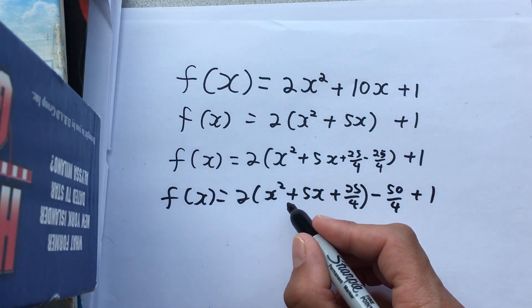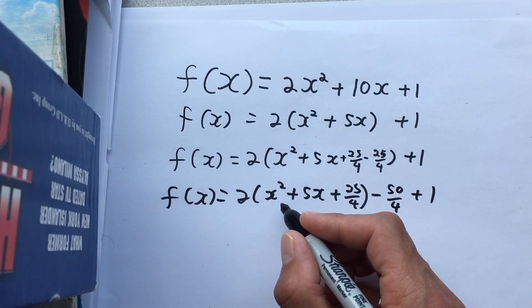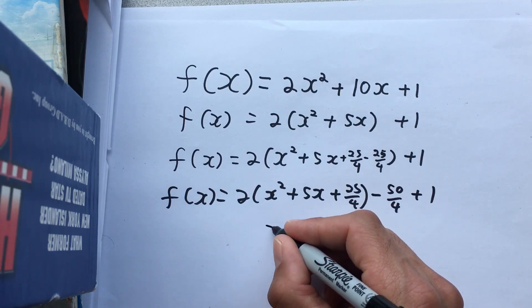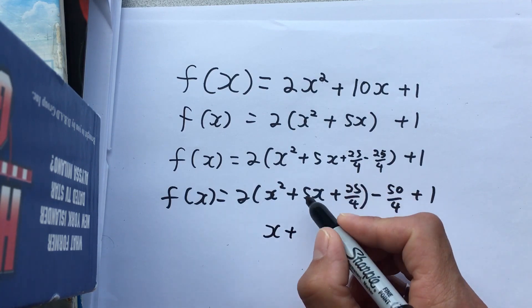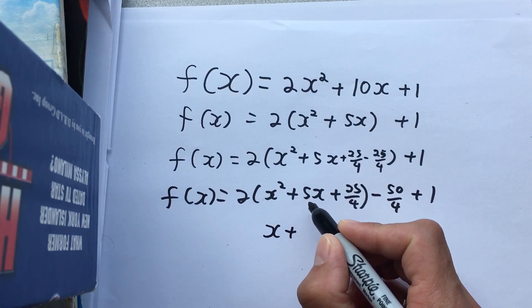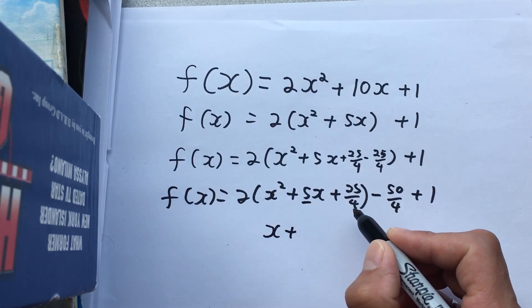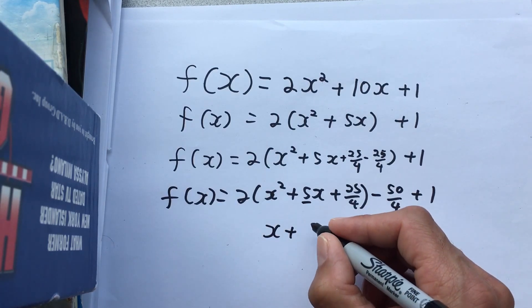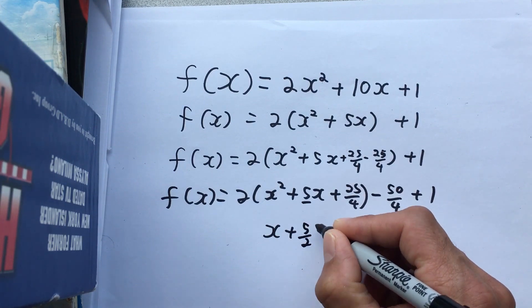Now I've got a perfect square in here. We factor a perfect square by writing down half of this, half of this coefficient, which is, of course, also the square root of that coefficient. In that case, it's just 5 over 2.